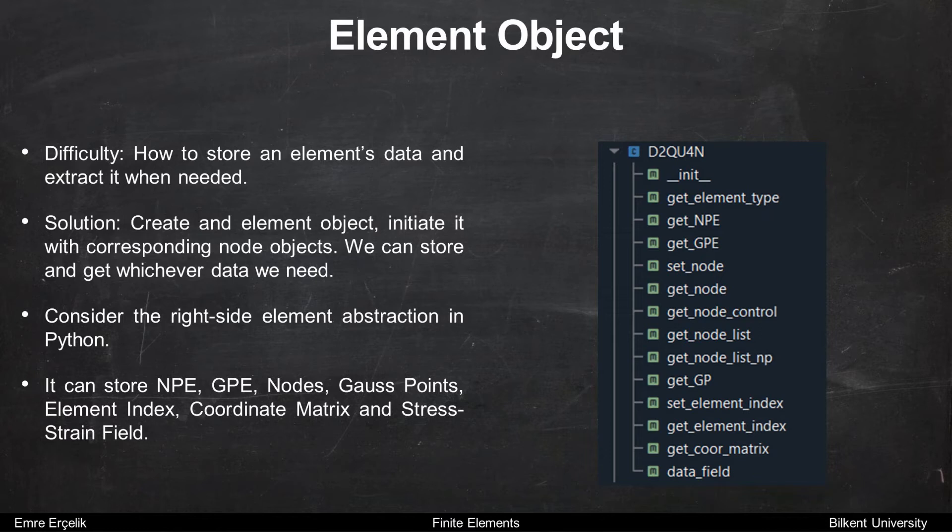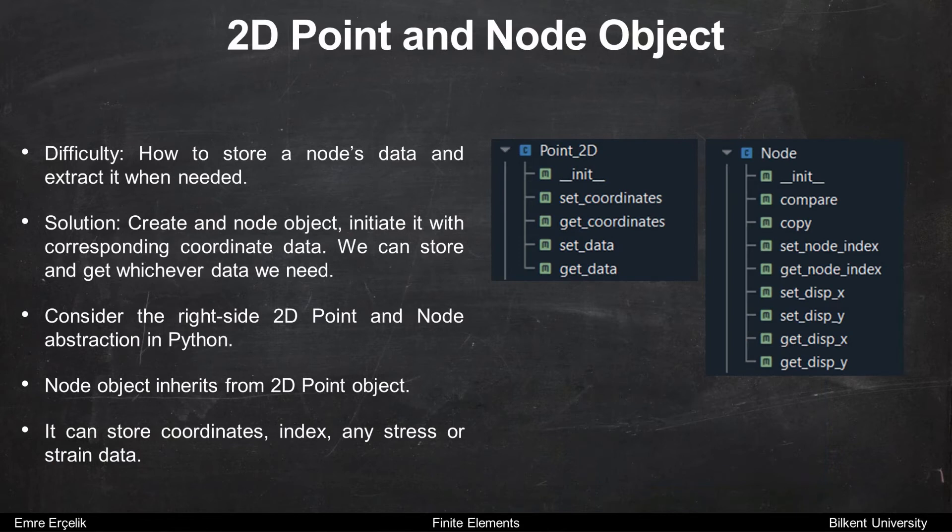By abstracting the element, we can get whichever data we need. Another difficulty is about points. Difficulty: how to store n nodes data and extract it when needed. We can solve this problem by creating a node object. We can initiate it with corresponding coordinate data. Then we can store and get whichever data we need.